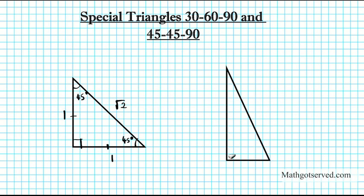For the 30-60-90 triangle, this is the right angle at 90 degrees. The smallest angle is 30 degrees and the other angle is 60 degrees. The side measures are: the shortest side is 1, then root 3, and the hypotenuse is 2.